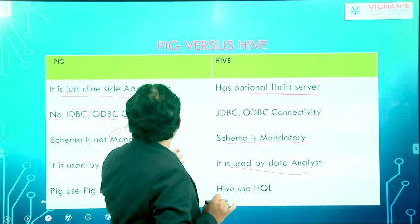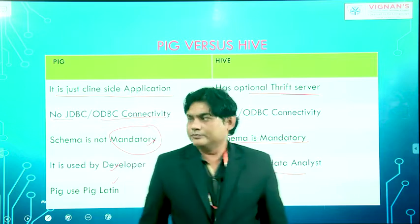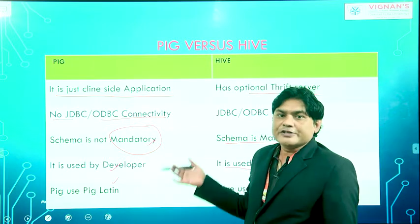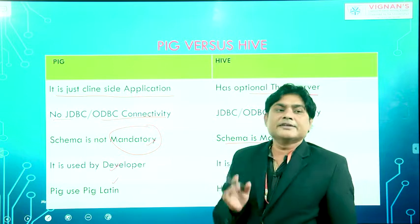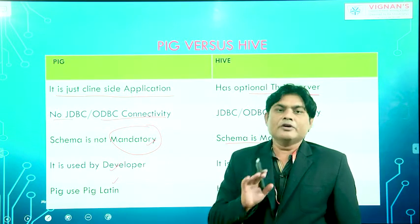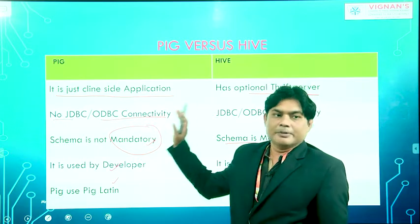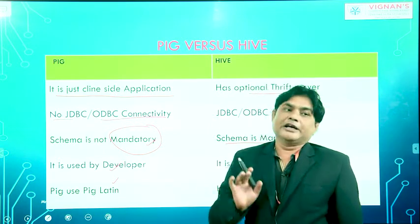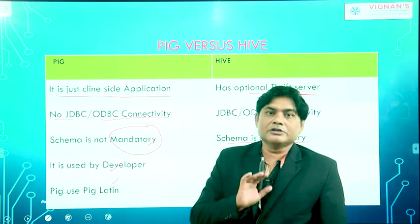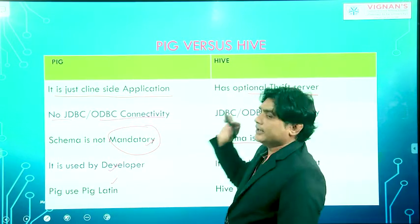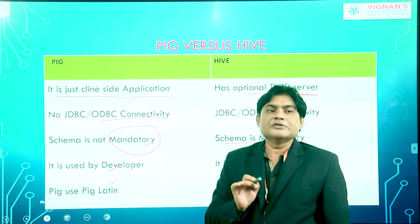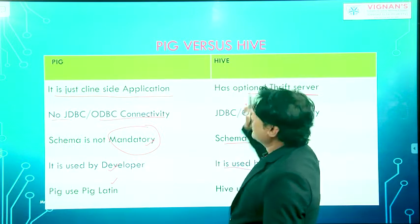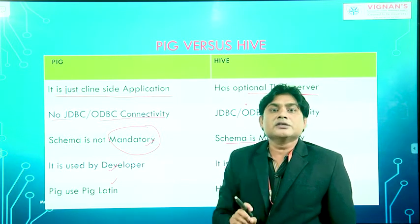Another difference is that Pig doesn't require metadata - there is no need of metadata for Pig. But Hive requires metadata, and to store metadata we need a Metastore for Hive. The Metastore is any relational database, any RDBMS, used to store metadata.